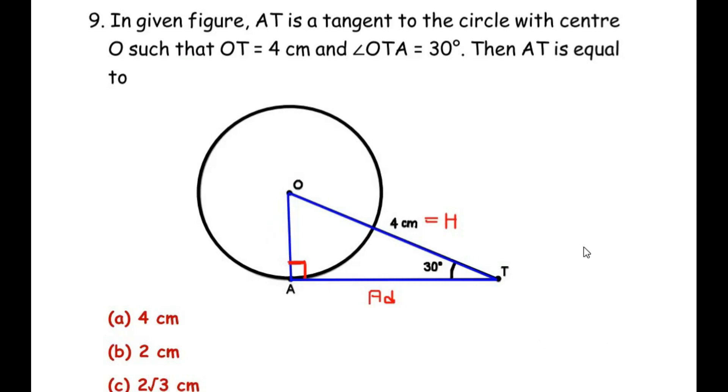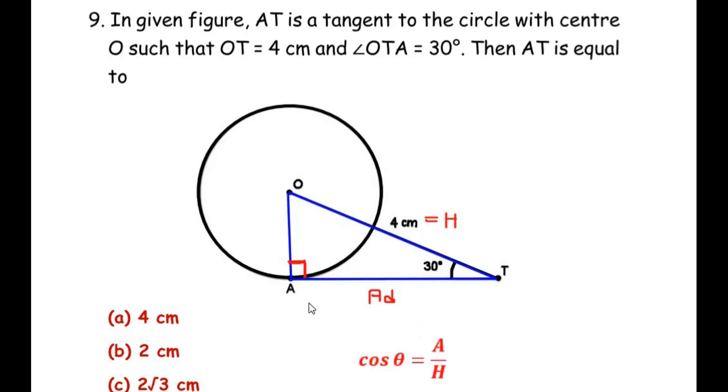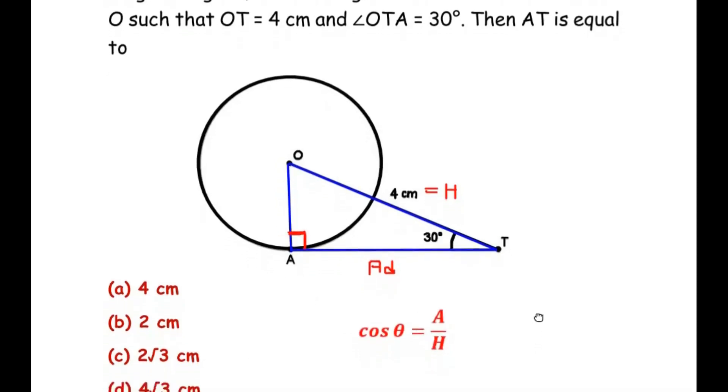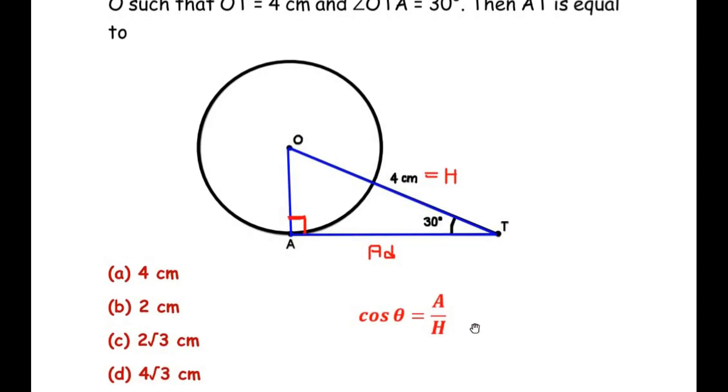Now we are going to make use of the trigonometric ratio which is cosine, which relates the adjacent side and the hypotenuse to the angle of concern. So let me write here. So cos theta is equal to adjacent side over hypotenuse.